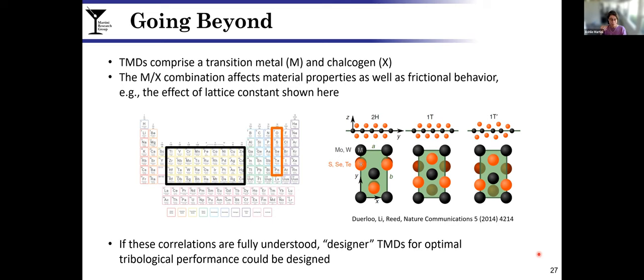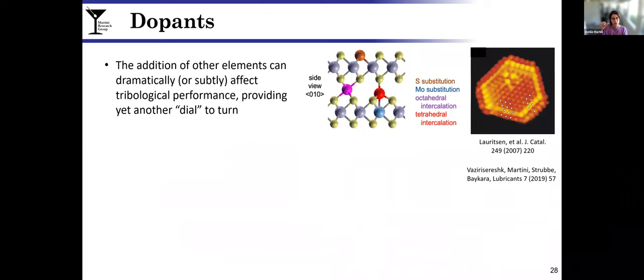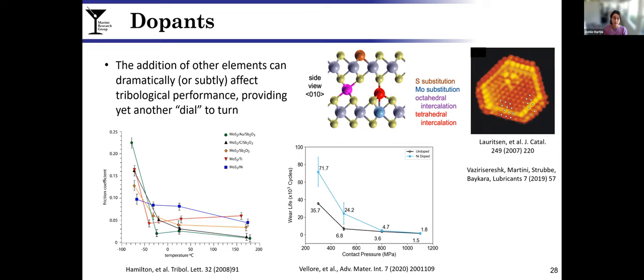Another dial that can be turned in MoS2 and similar such studies is dopants. Dopants are very small elements added in very small quantities to the material that can completely change their properties. For MoS2 specifically, it's been shown that dopants can drastically affect their friction and particularly their temperature performance. This is a study where at high temperature we see one of the best materials is this gold-based dopant right here, this green one. But at lower temperatures, a nickel dopant was found to be best. So again, adding very small quantities of dopants, you're completely changing the properties.